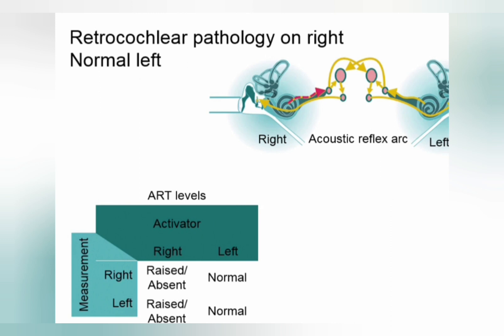If the acoustic neuroma is on the right side but you give the stimulus on the left side, you will have a normal ipsilateral response if the left side has no acoustic neuroma. It can also have a normal contralateral response. However, if the tumor is large enough to compress the facial nerve, then the contralateral response will also be affected. Thus, tumors like acoustic neuroma have a variable presentation — there may be a normal reflex, a raised reflex, a total absent reflex, or a decreased reflex.